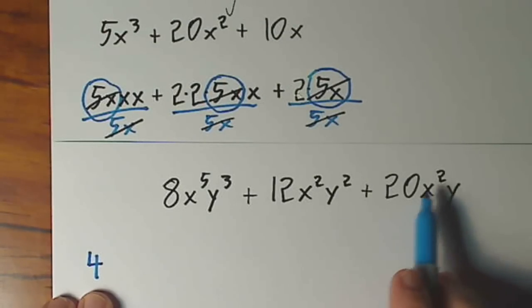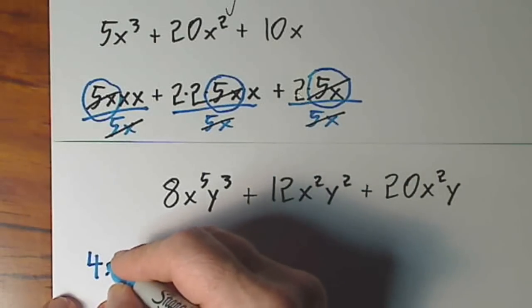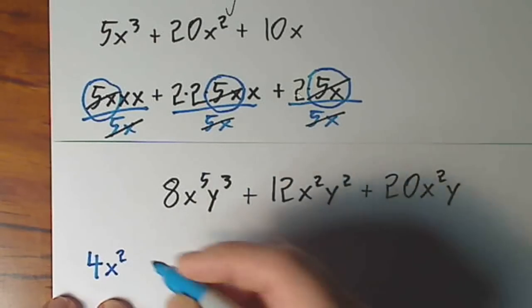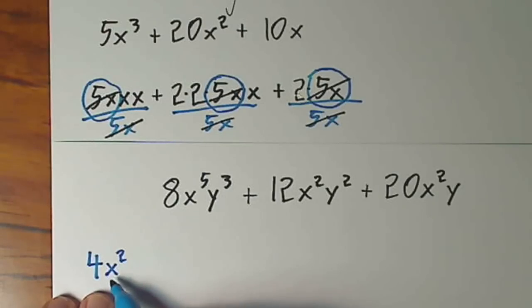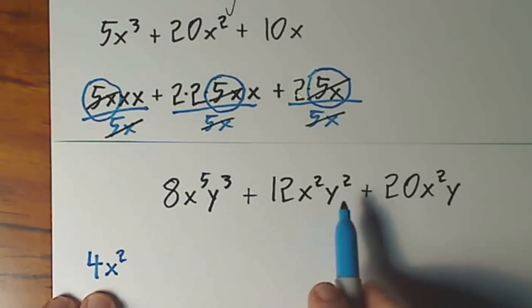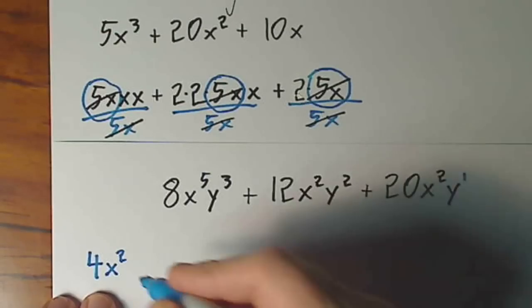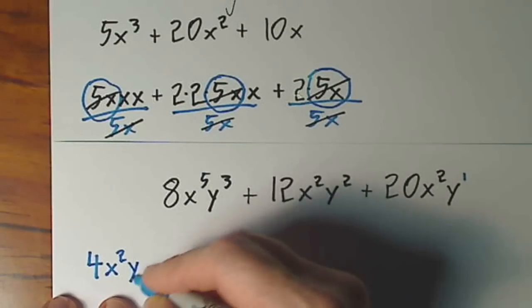And as far as the variables, x to the second is the most x's that I can get out of each term. So I'll be dividing by x to the second. So I have to be willing to multiply by x to the second. And as far as our y variables, y to the first, remember there's a 1 up there, y to the first is the most I can get out of each term.